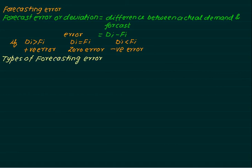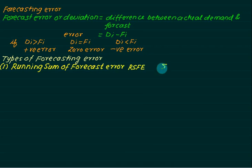There are a number of types of forecasting error. The very first one is running sum of forecast error. As the name indicates, it is the sum of the forecast error. RSFE is given by summation of Di minus Fi.